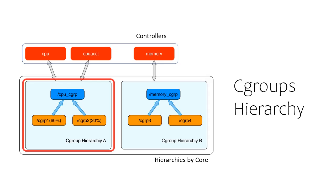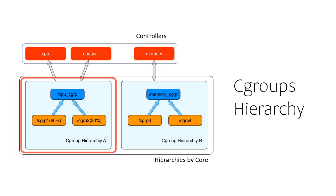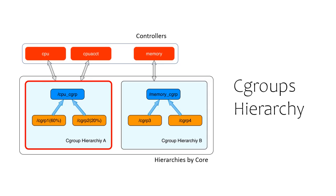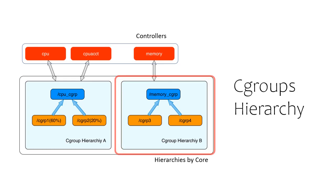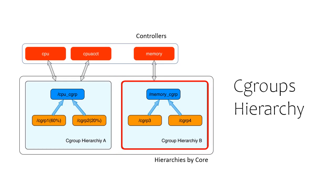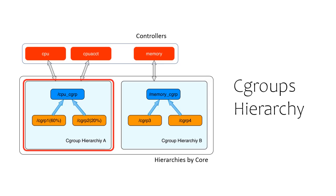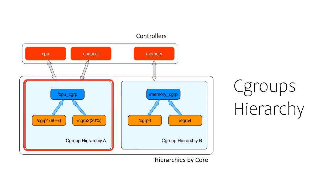Hierarchy-A contains CPU_CGRP as a root cgroup which contains two subgroups, CGRP1 and CGRP2. Similarly, hierarchy-B contains memory_CGRP as a root cgroup which contains two subgroups, CGRP3 and CGRP4. Processes in CGRP1 can use 60% of the CPU time, and processes in CGRP2 are limited to use only 20% of the CPU time.